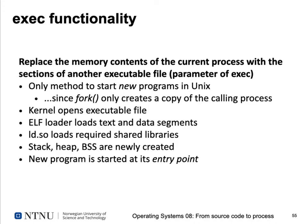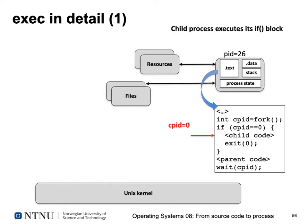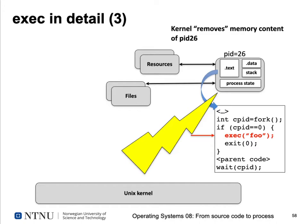The operating system then creates a stack segment, heap segment, and BSS in memory, since these are not contained in the ELF file. Finally, the kernel jumps to the entry point indicated in the ELF file — the very first instruction of the program. In our child process, which is inside an if-block, the child code executes exec with a file like foo. You may need to pass additional parameters such as arguments. The exec system call changes mode to the Unix kernel.